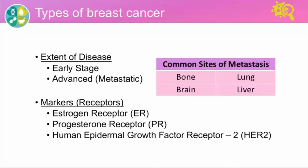However, the most important way that we classify breast cancer when it comes to treatment is to describe both the extent of disease and the markers or receptors. When we say extent of disease, that's really a way of thinking about the amount of cancer and the goals of treatment. Breast cancer can broadly be grouped into early stage and advanced or metastatic.